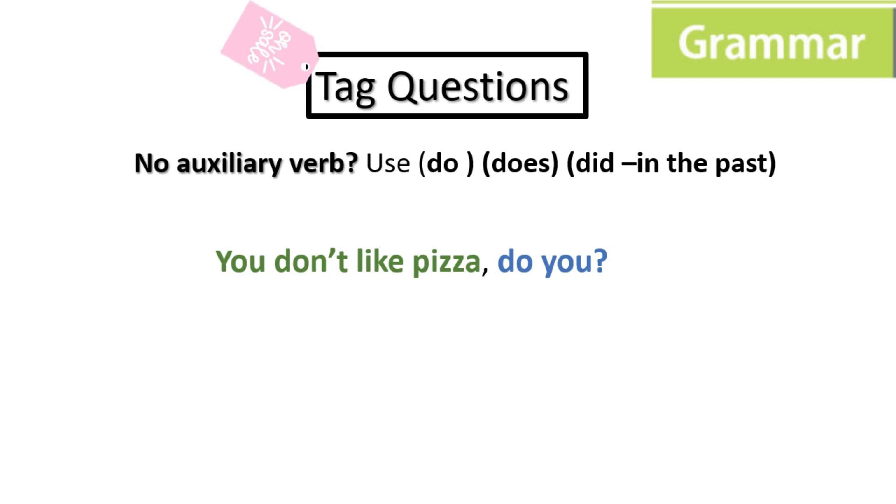Notice we're using opposites now. When we have the negative statement, we use the positive tag. You don't like pizza, do you? We don't have a modal and we don't have an auxiliary verb, so we use do.